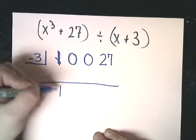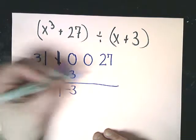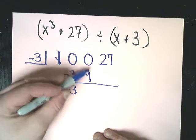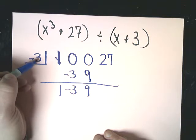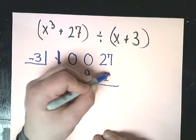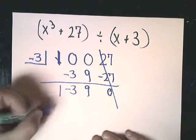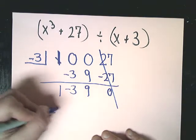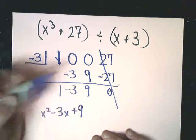So bring down my 1. Do 1 times negative 3, and I get this. Then negative 3 times negative 3 is 9. Bring down my 9 there. And then you do 9 times negative 3, and you get negative 27, which is a good thing because that means there's no remainder. So it should be x squared minus 3x plus 9.